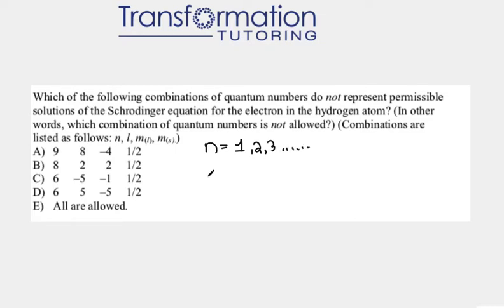The next quantum number is l. And l has a rule, it depends on n. So l has to go from 0 to n minus 1. These are all of the possible l values. So let me give you an example.